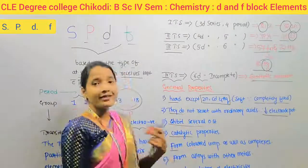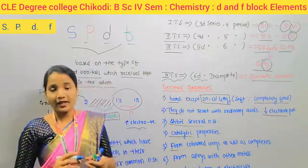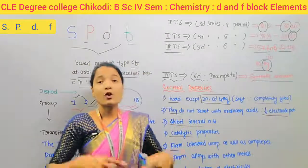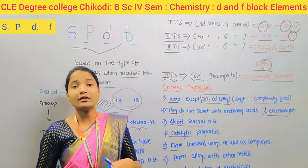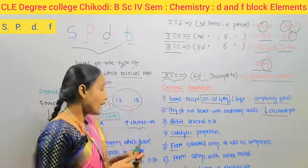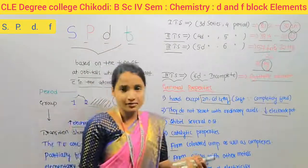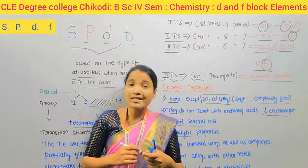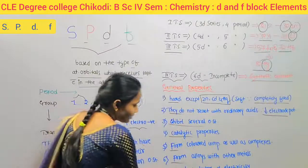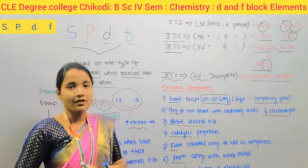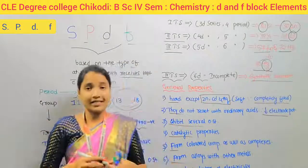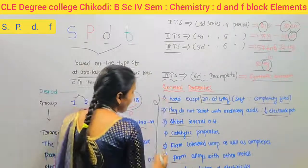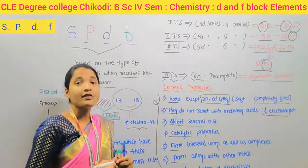D-block elements form colored compounds as well as complexes. They also form alloys with other metals — alloys being mixtures of elements. Additionally, these elements are good conductors of electricity. These are the very important properties of D-block elements.